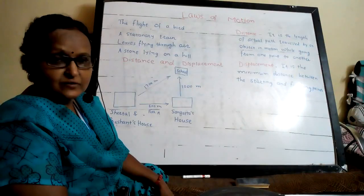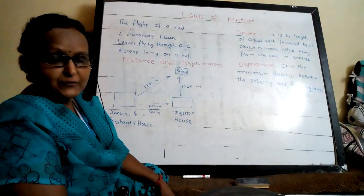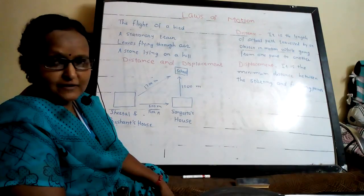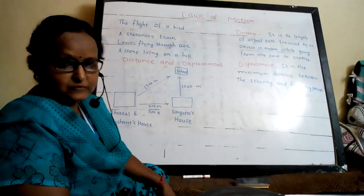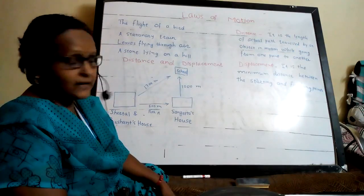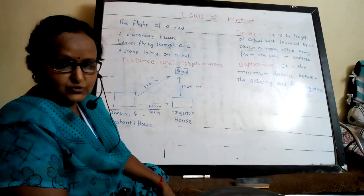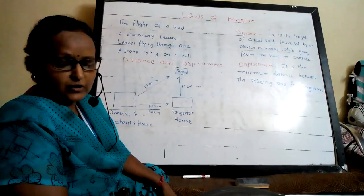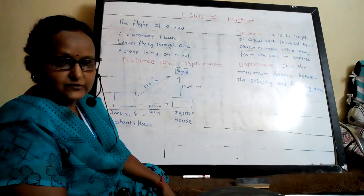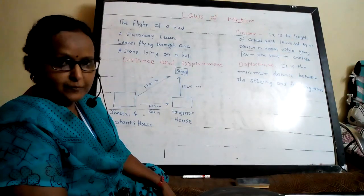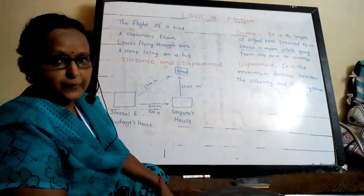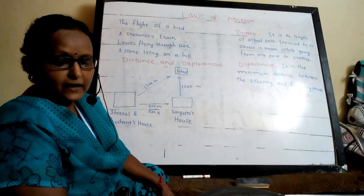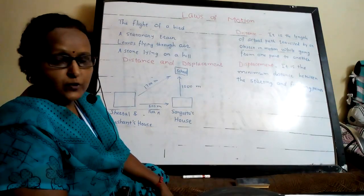Good morning students, hope you are safe and staying at home. You are in the ninth standard and from today we are going to start science. Last year you had only one paper of science for 50 marks. Now you have to appear for two papers: Science 1 and Science 2. Lessons 1 to 5 are for Science 1 and lessons 6 to 10 are for Science 2, each paper for 40 marks, and 20 marks are practicals — giving 100 marks total for science.